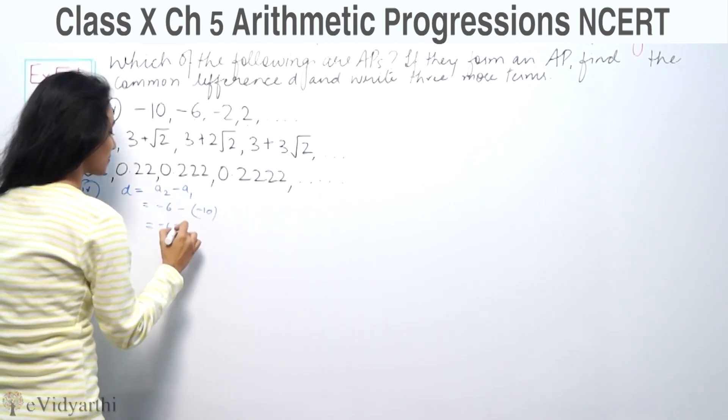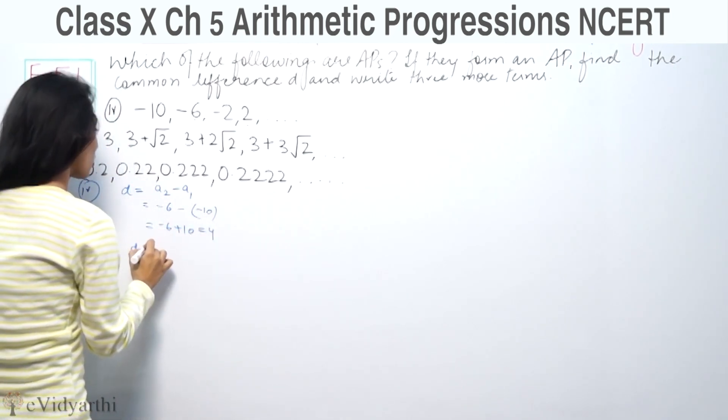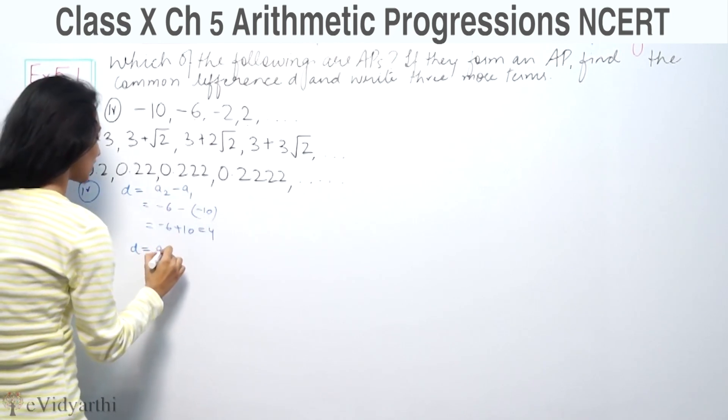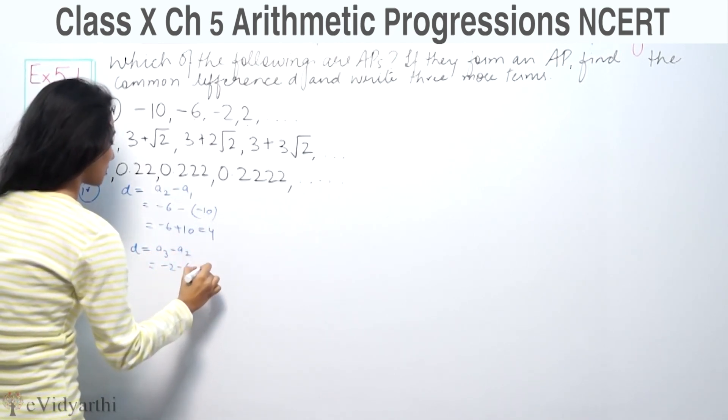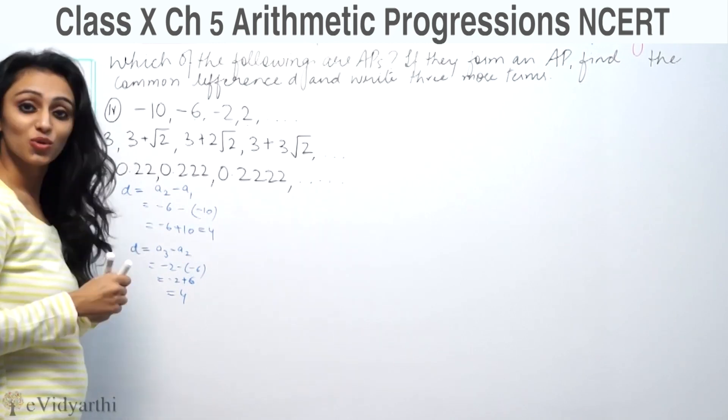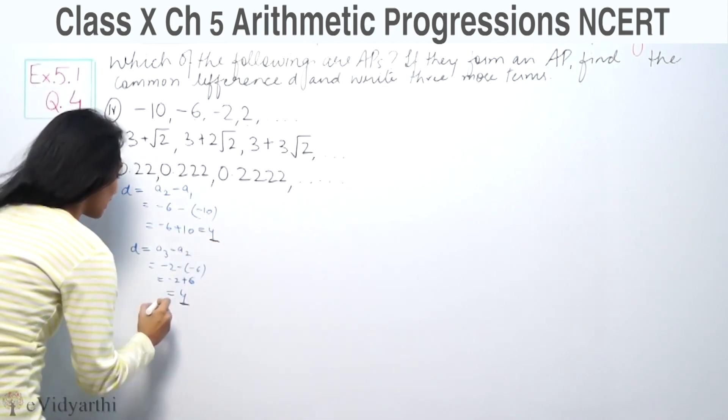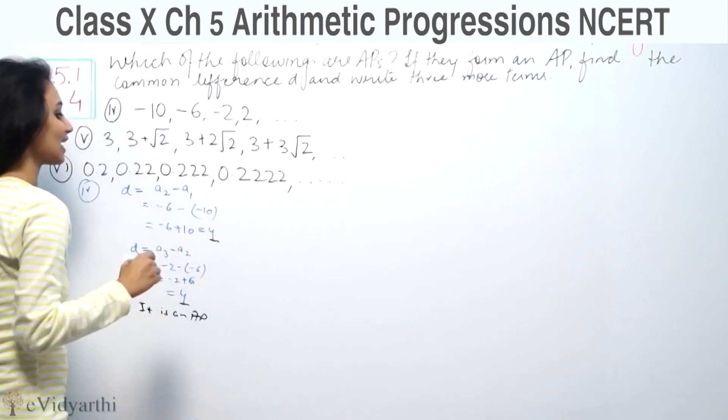So -6 minus (-10) equals -6 plus 10 equals 4. We check the next common difference, A3 minus A2. We have -2 minus (-6), so -2 plus 6 equals 4. The common difference is the same, so this is an AP.